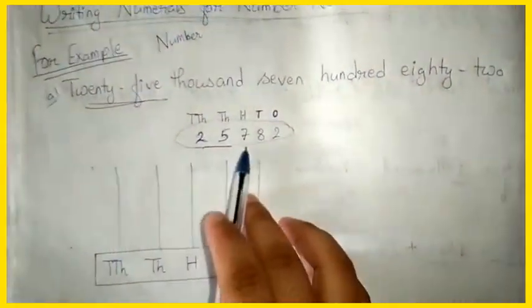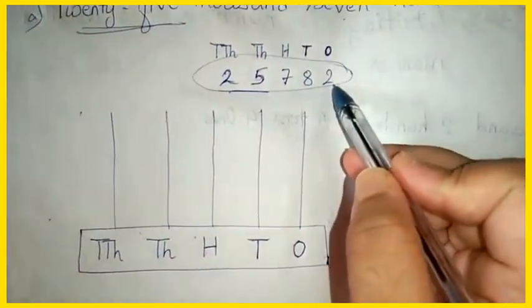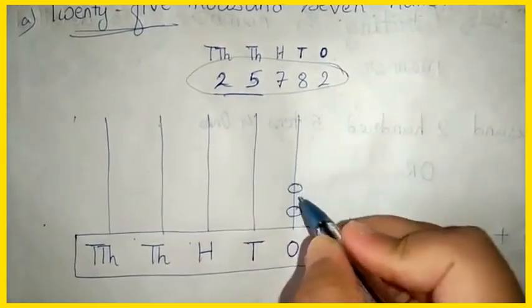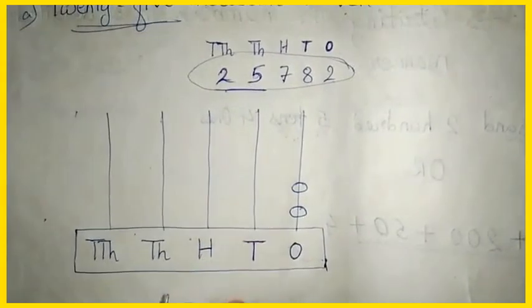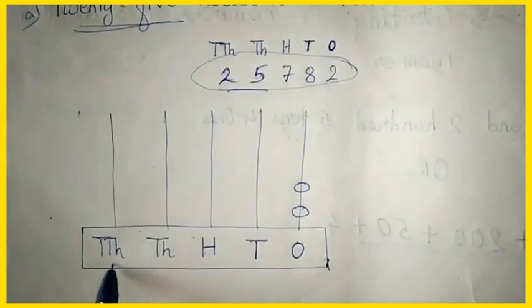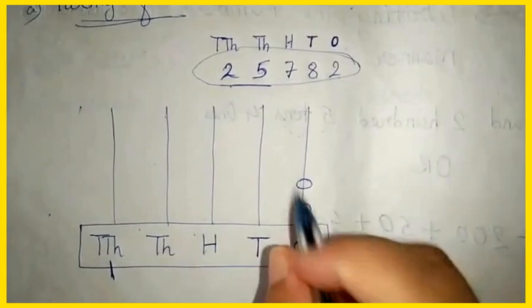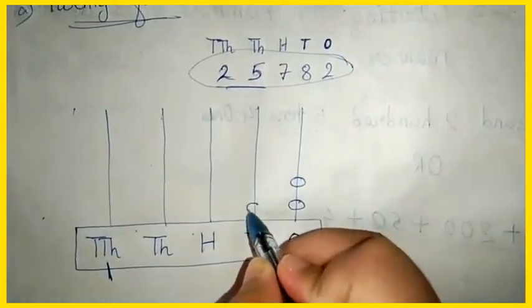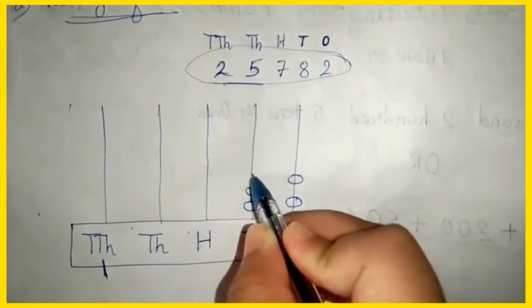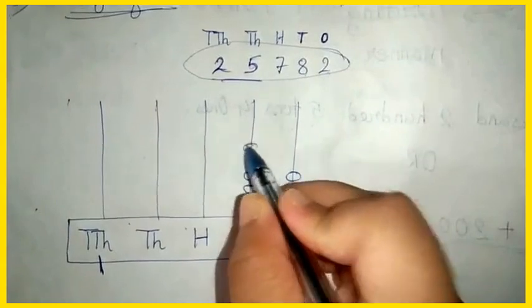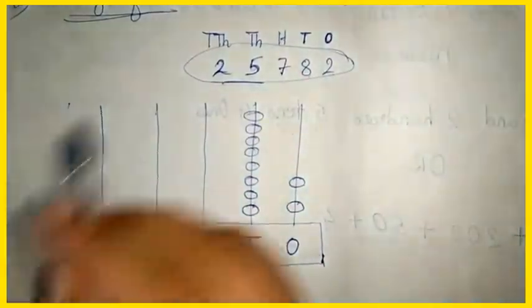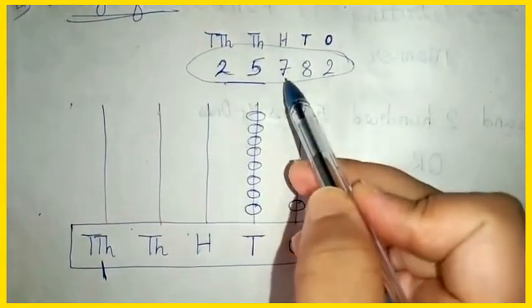Now let us represent this number on an abacus. In the ones place the digit is 2, so there will be 2 beads. Just as we did for four-digit numbers, we do the same here — the ten-thousands rod is simply added. In the tens place the digit is 8, so there will be 8 beads: one, two, three, four, five, six, seven, eight. In the hundreds place the digit is 7.